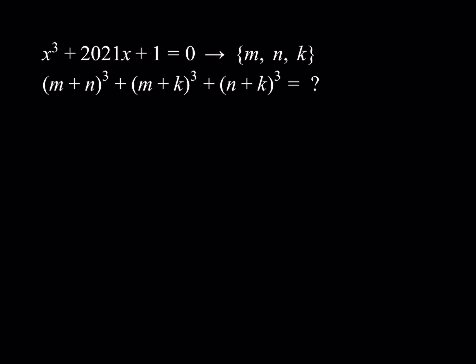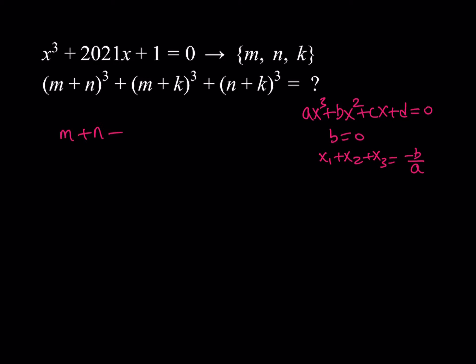The first thing I want you to notice is that this equation is missing the x squared term. Therefore, if you write your cubic as ax³ + bx² + cx + d = 0, we have b equals 0. In a cubic equation, x₁ + x₂ + x₃ equals negative b over a, which is always true for any polynomial equation — cubic, quartic, quintic, doesn't matter. So if b equals 0, that means the sum of the roots is also 0.